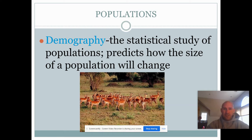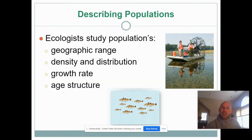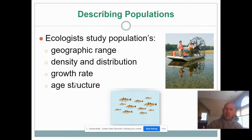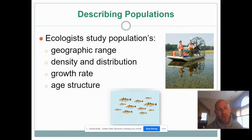There are a few key aspects to population growth we'll talk about today. We can talk about populations in terms of geographic range — how far a population stretches going further north or further south, whether it's widespread or dense and compact. We can talk about density and distribution, growth rate, and age structure — what percentage of the population falls into different age brackets.